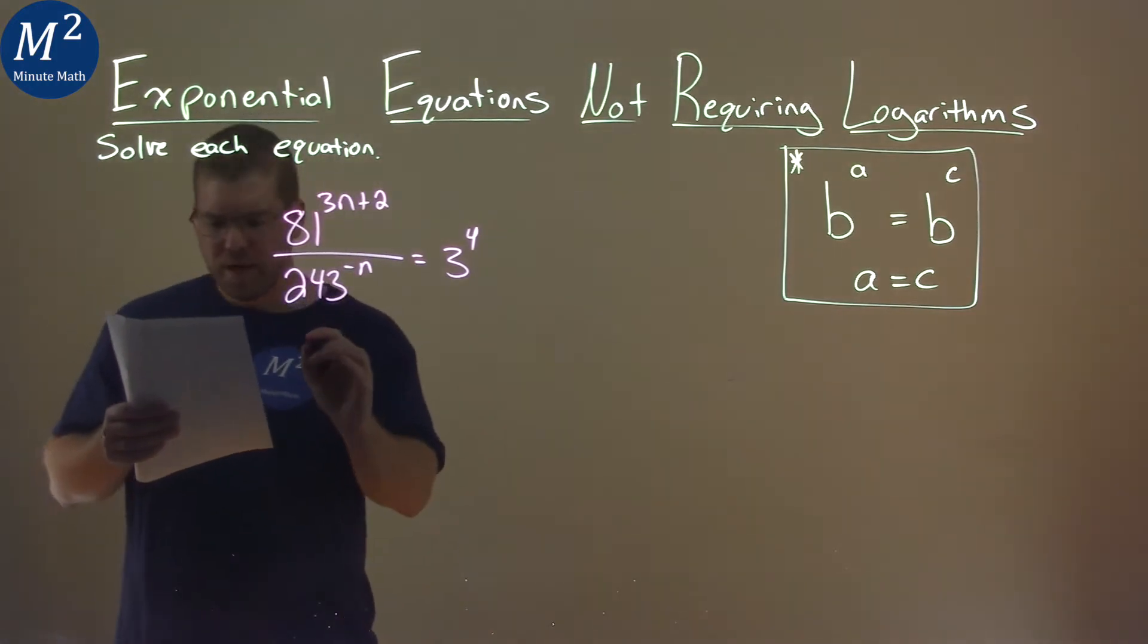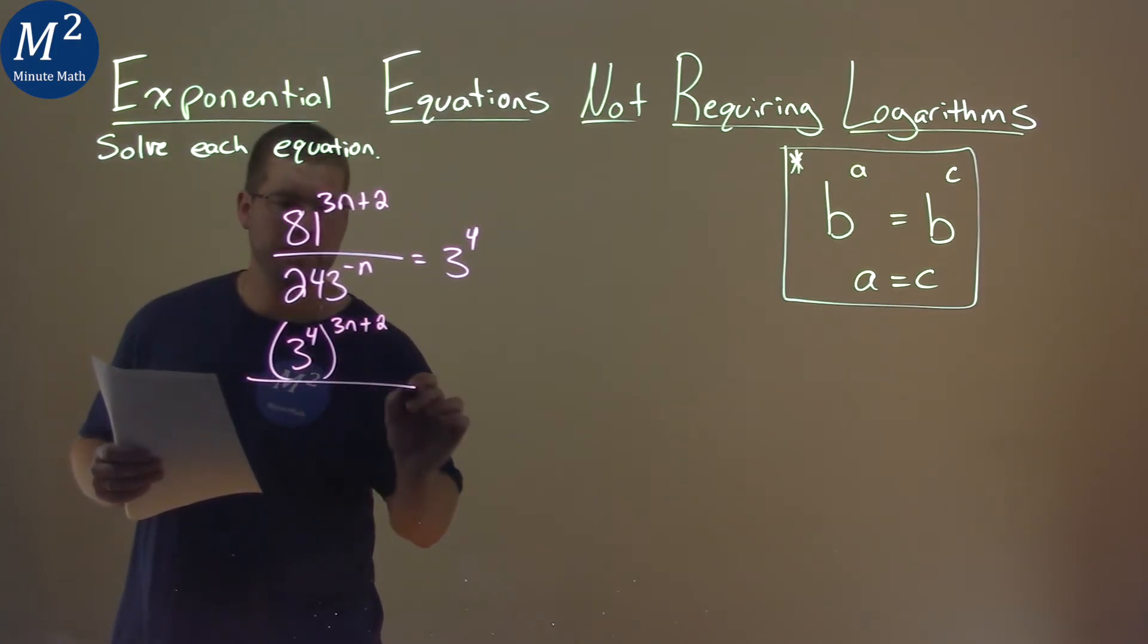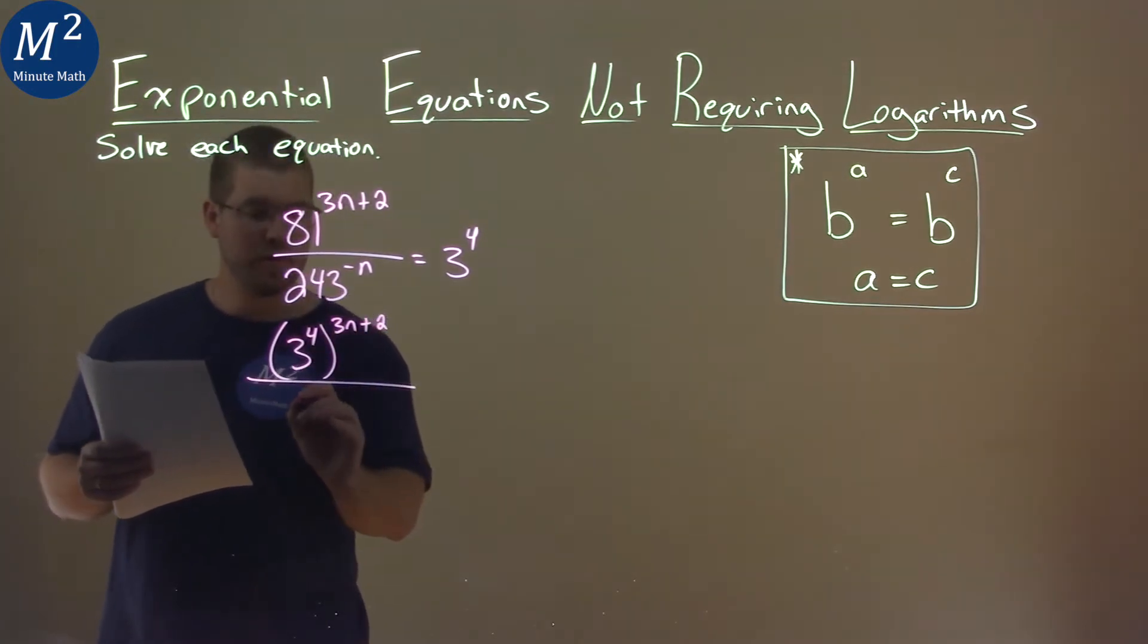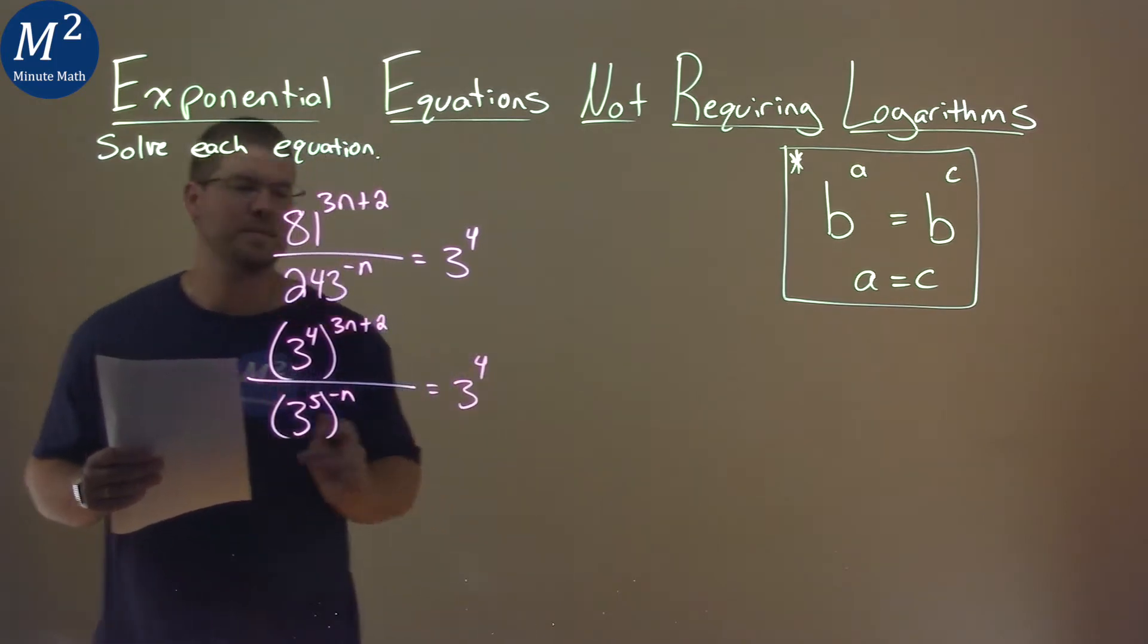What does that mean? Well, 81 is the same thing as 3 to the 4th power. So I'm going to do that, but keep my exponent of 3n plus 2 there. 243 is 3 to the 5th power, and I still have my negative n for the exponent. And 3 to the 4th power is still there.